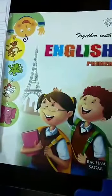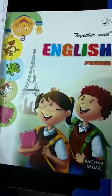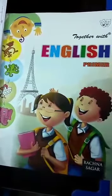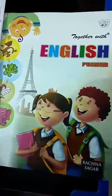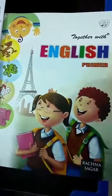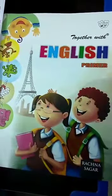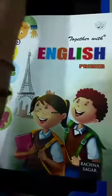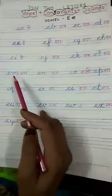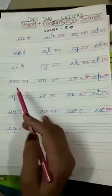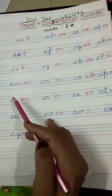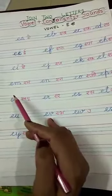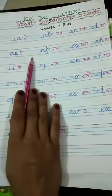Till now, you have understood how to read and write vowels with consonants and their sounds. Yesterday, we learned vowel A with all consonants and its phonic sound. Today, I will make you understand how to read and write vowel E and I along with all consonants and their phonic sounds. One important thing: whenever we use vowels with consonants, the phonic sounds become different. Let's start with vowel E and I.